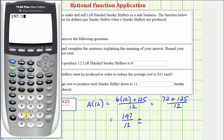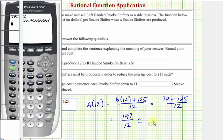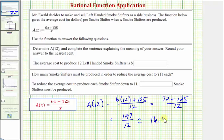197 divided by 12 to the nearest cent would be approximately 16 dollars and 42 cents. So the average cost to produce 12 left-handed smoke shifters is 16 dollars and 42 cents.